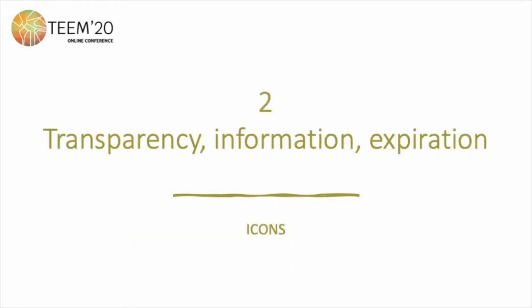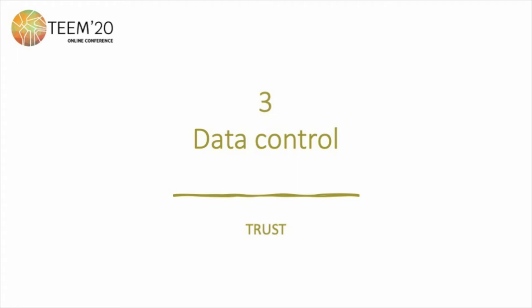Point number two is about transparency, information, and exploration — students and educational roles have to be informed and have to know how their data is going to be transformed, used, and who is going to use that collected data. Point number three is about data control. Data control is about trust: if students have their data control, institutions are gaining trust. So we have to try to give all the control to the students, and using local devices instead of cloud computing devices, we achieve this data control in the first step.